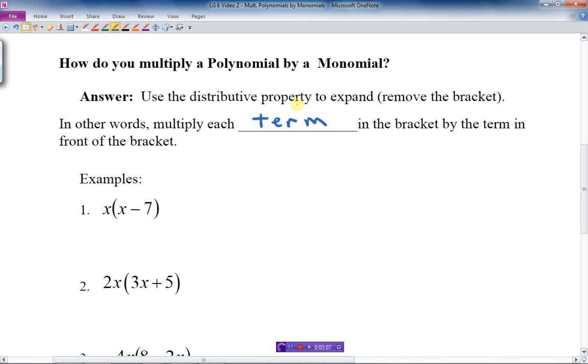In other words, we multiply each term in the bracket by the term in front of the bracket. What's the term in front of the bracket? It's an x here. In the bracket, we have two terms: an x and a minus 7. We're going to multiply this term in front by each of the terms in the brackets. First, we have x times x. Then we have minus 7 times x.